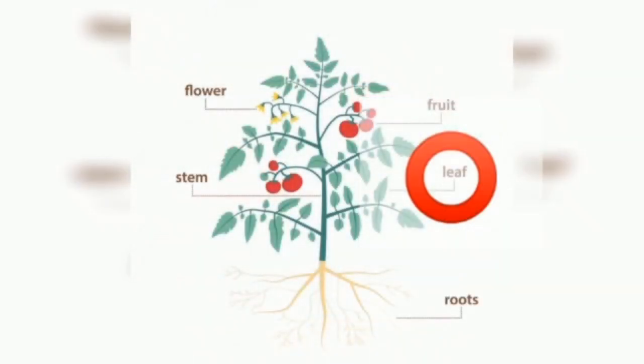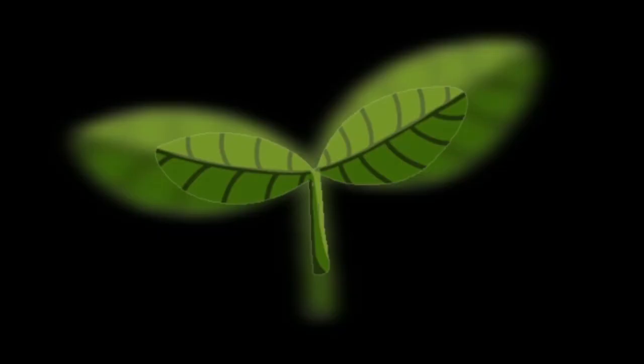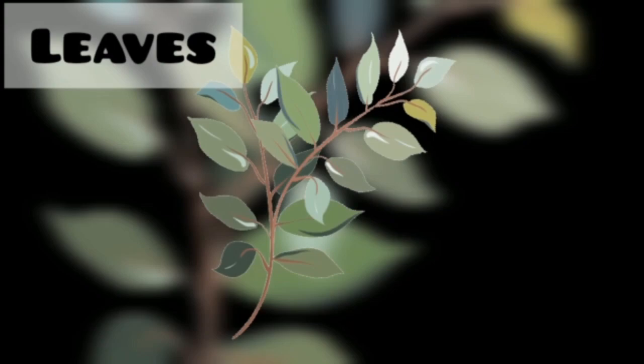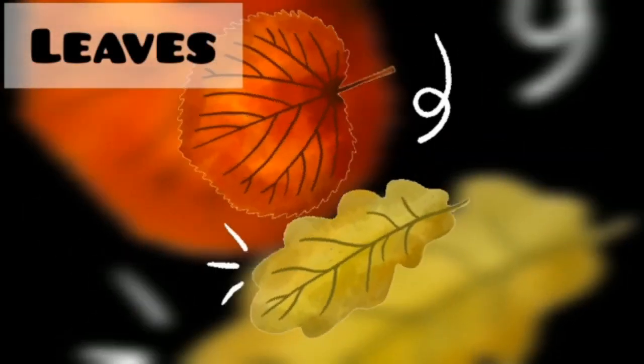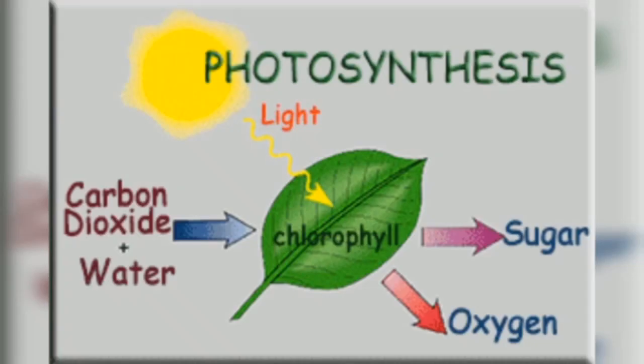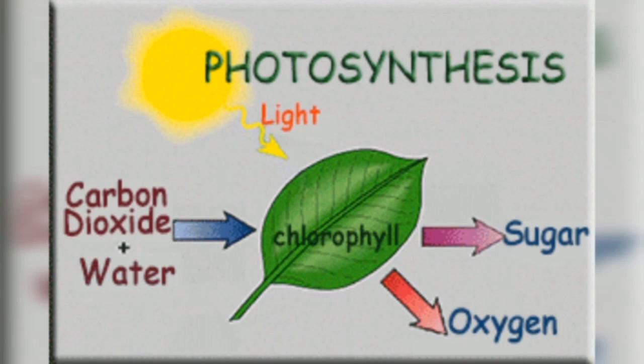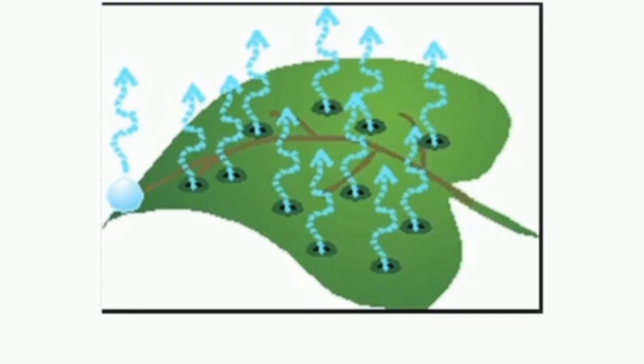Leaves. They are mostly found above the ground and attached to the stem. It makes food for the plant with the help of sunlight, carbon dioxide and water through photosynthesis. It helps in reproduction and also in evaporation.